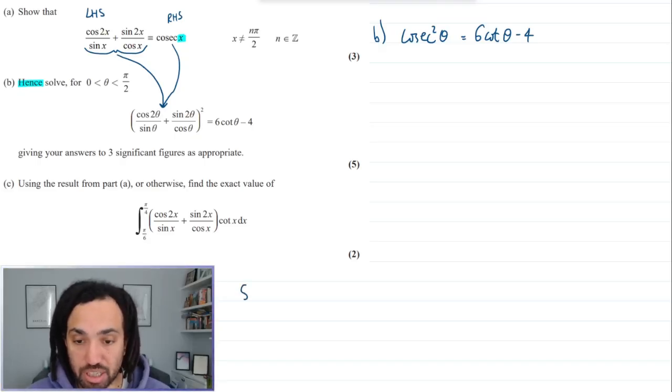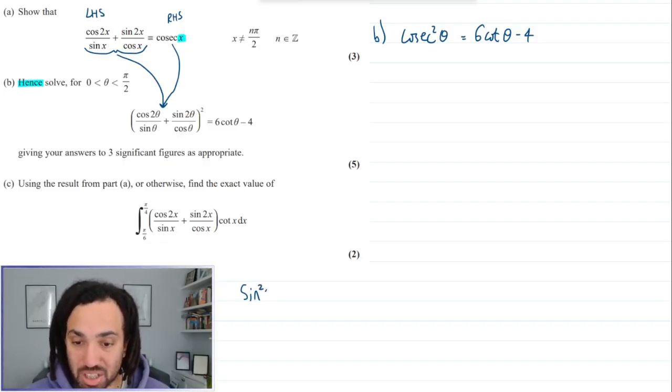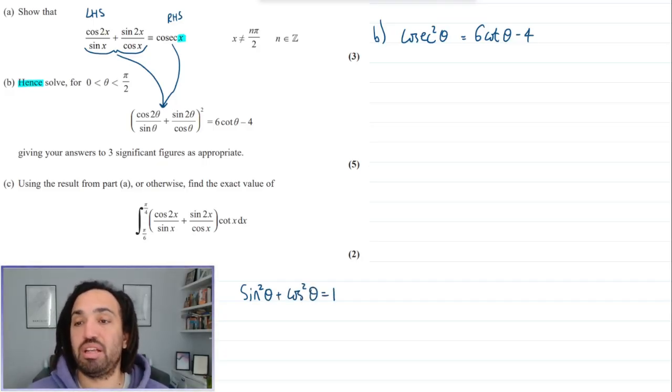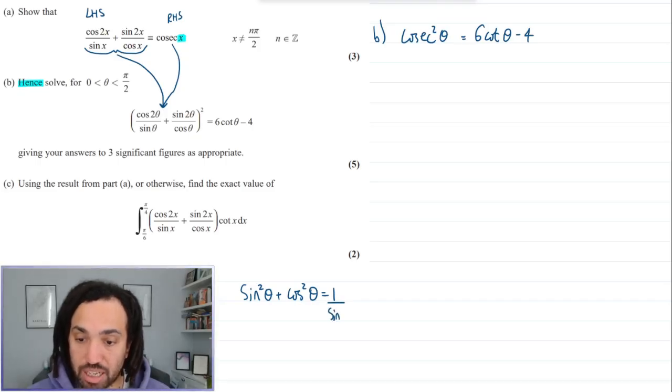Now I want a cosec squared, so to get a cosec I need to divide through by sine squared. So let's do that for every term here in order to keep the equality.